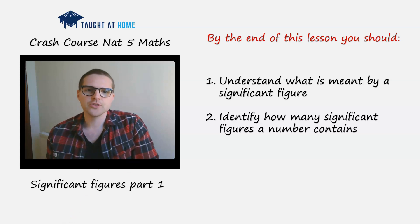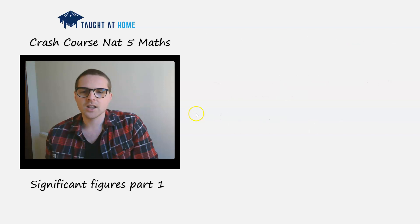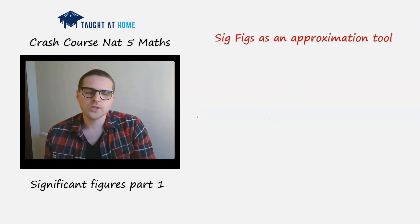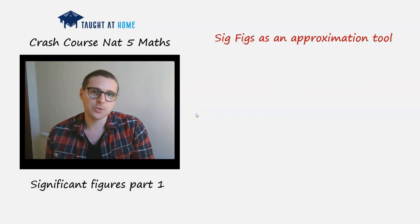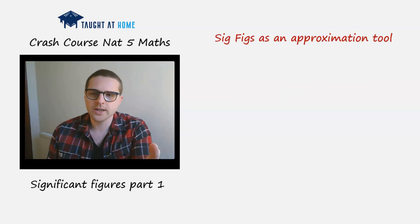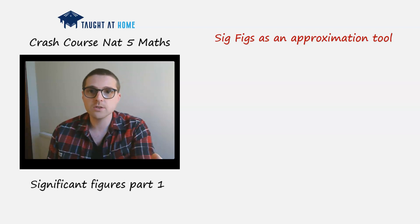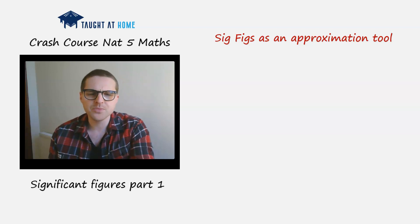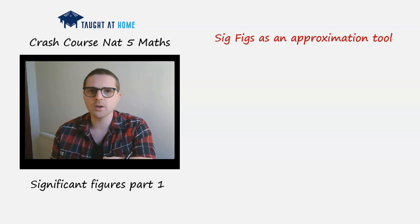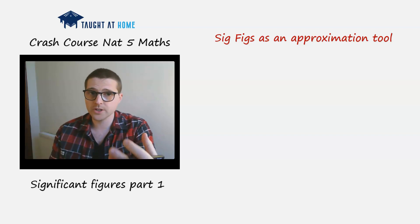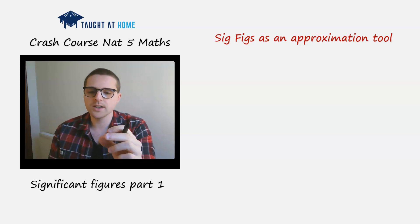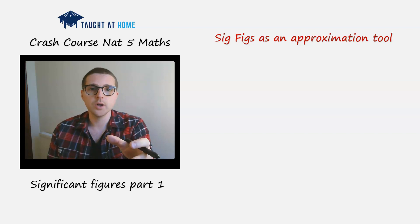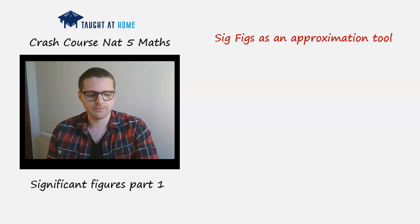The first thing we need to realise is that significant figures are used as an approximation tool. We already know an example of this when we round to a certain number of decimal places. This is similar — we're approximating a number, but rather than rounding to decimal places, we're rounding to a certain number of digits in that number.